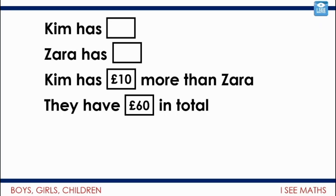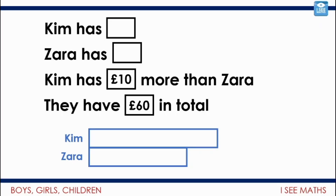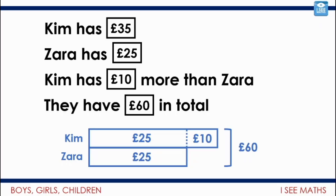We're going to have a look at one last example, and this is in the context of money. We don't know how much money Kim has or how much money Zara has yet, but we know that Kim has 10 pounds more than Zara, and we know they've got 60 pounds in total. Let's use a bar model. Kim's bar is longer since she has more. Apart from that difference of 10 pounds, they have the same amount, which is 50 pounds. Split that equally — 25 and 25 each — plus Kim has that extra 10 pounds. So Kim has 35 pounds and Zara has 25 pounds. I can check: 35 plus 25 is 60 pounds, and the difference between 35 and 25 is 10 pounds.